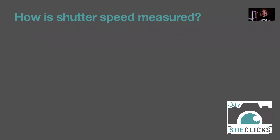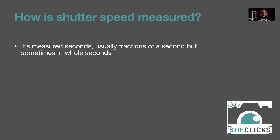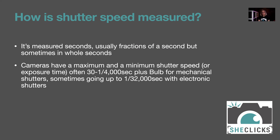Shutter speed is measured in seconds — usually in fractions of a second, sometimes in whole seconds, and occasionally in minutes with Bulb mode. Cameras have a maximum and minimum shutter speed, often in the region of 30 seconds to around one four-thousandth of a second, though some cameras may go faster or slower.